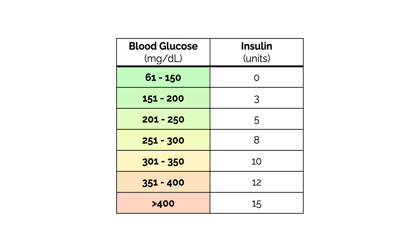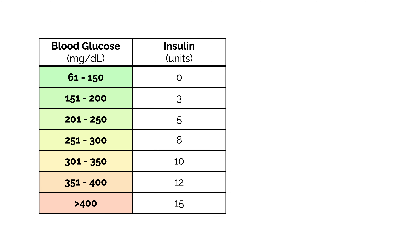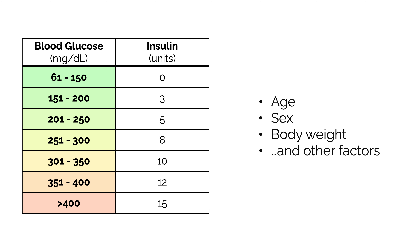For example, using this scale, if your blood sugar before a meal was 225, you would give yourself 5 units of insulin, and if your blood sugar was 316, you would give yourself 10 units. Everybody's scale might be slightly different based on age, sex, body weight, and other factors that can affect how much insulin is needed.